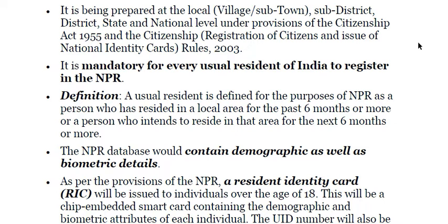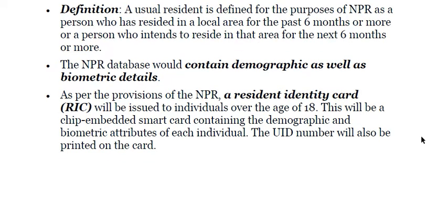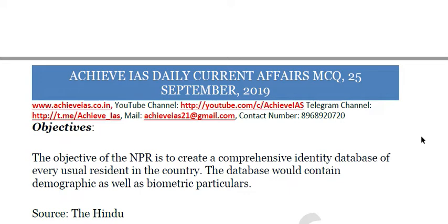The NPR is a register of usual residents of the country, prepared at the village, sub-district, district, state and national levels under the Citizenship Act 1955 and Citizenship Rules 2003. A 'usual resident' is defined as a person who has resided in a local area for the past six months or more, or intends to reside there for the next six months or more. A chip-embedded smart card containing demographic and biometric attributes will be issued to individuals over 18. The objective is to create a comprehensive identity database of every usual resident.